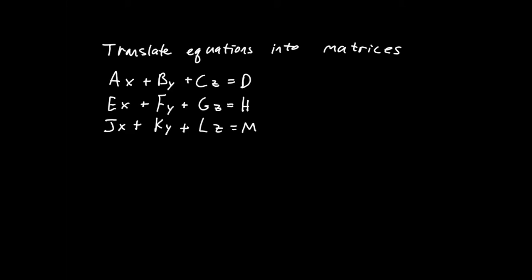It's useful to line up similar variables. All the x's are in a column for the three different equations, all the y's are together, and all the z's are together, with all the constants on the other side. We're going to translate this into a matrix equation. The first matrix is going to have all the coefficients on x, y, and z in these three equations. Writing the equations out this way makes the transfer into matrix form very easy — the matrix is going to look very much like the equations do.